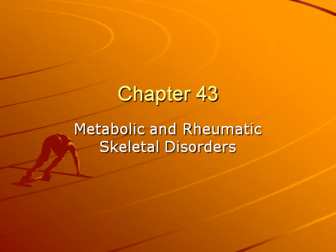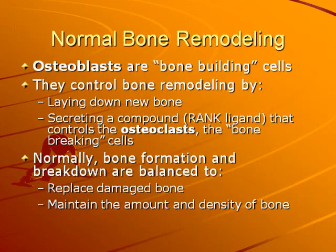Chapter 43 is a musculoskeletal chapter. We'll talk about some metabolic and rheumatic skeletal disorders. A quick review on what we've already talked about with normal bone remodeling. Remember that your osteoblasts, or your bone building cells, control bone remodeling by basically laying down new bone. They secrete a compound called a rank ligand that controls the osteoclasts, which are the bone breaking cells, causing synthesis of proteins and calcium salts needed to build bone.